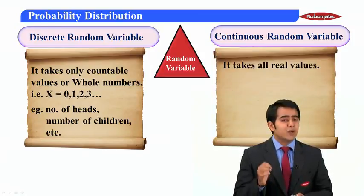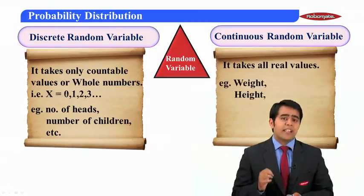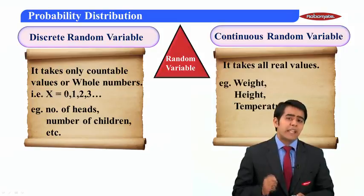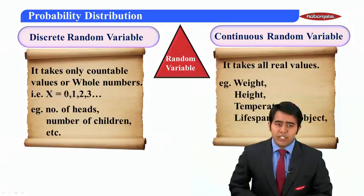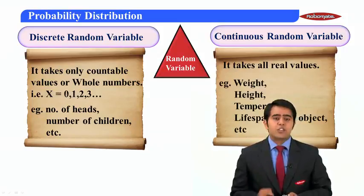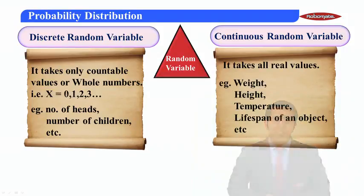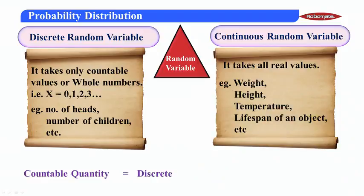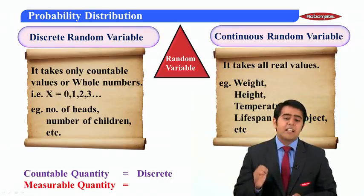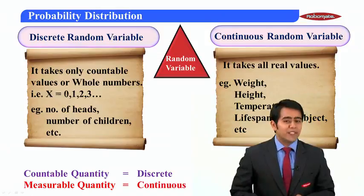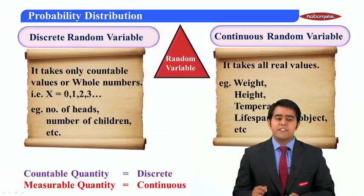A continuous random variable takes all real values, including decimals. Examples are weight, height, temperature of a place, and lifespan of an object. To summarize: if the quantity is countable we call it a discrete random variable, and if it is measurable we call it a continuous random variable.